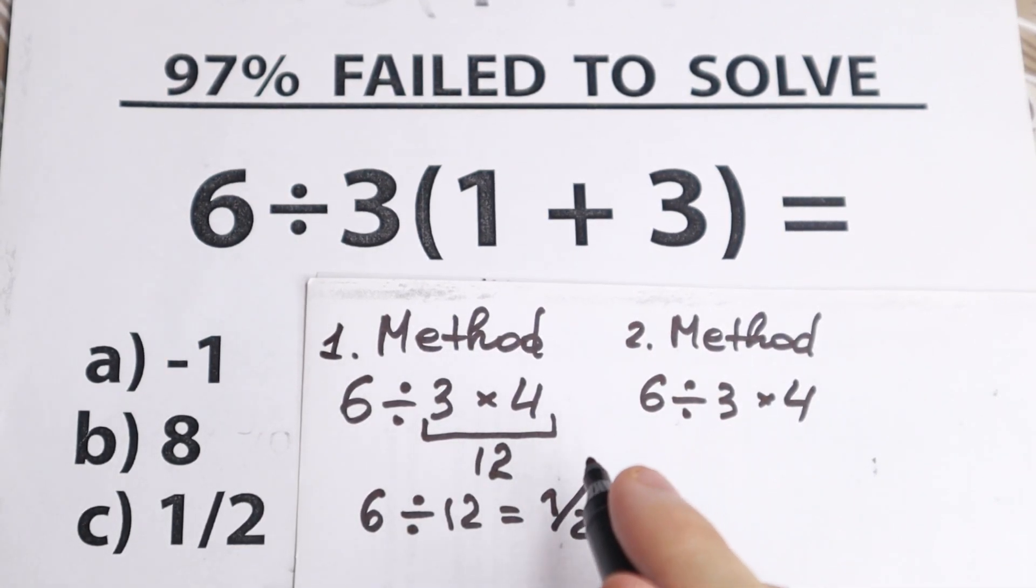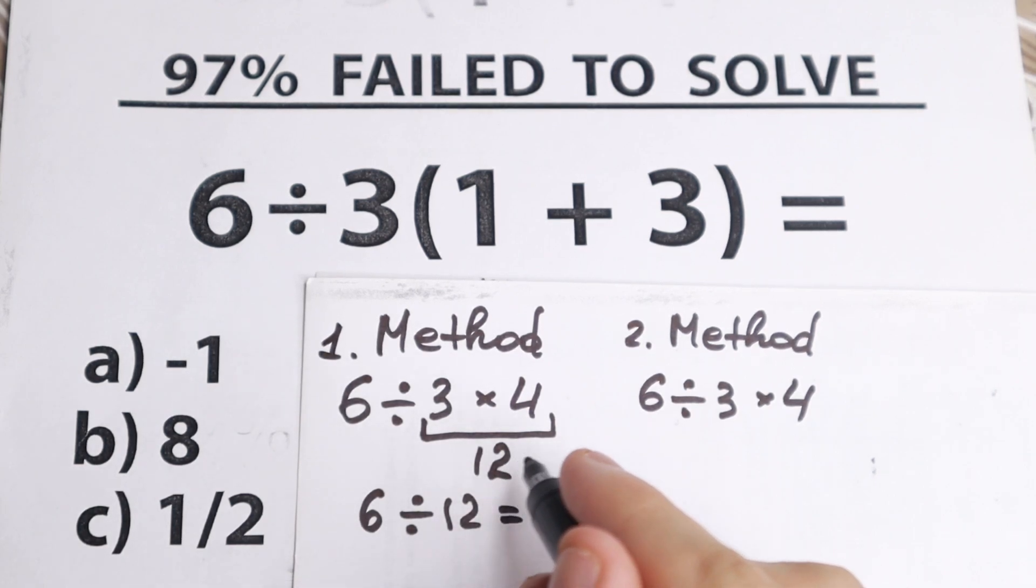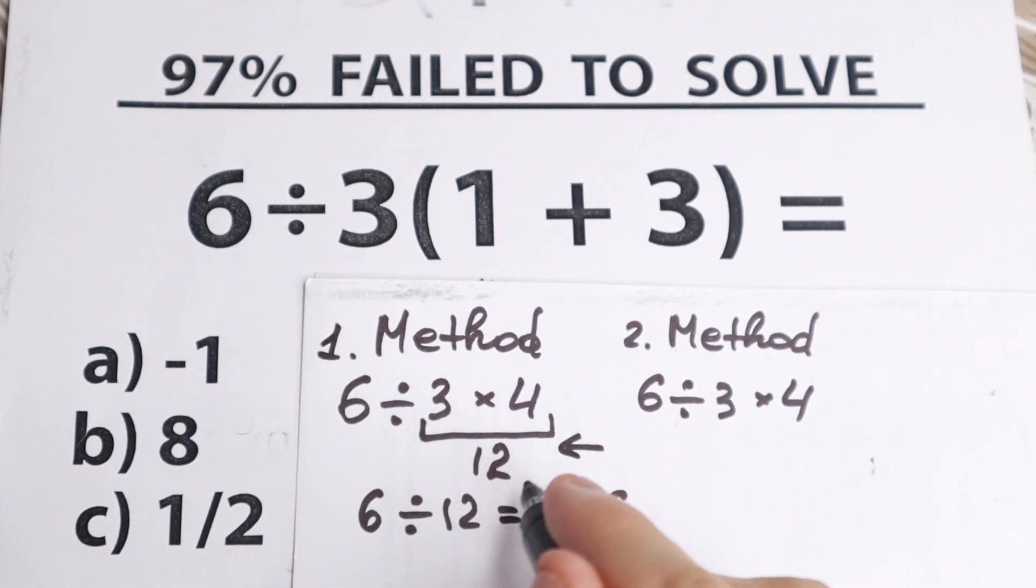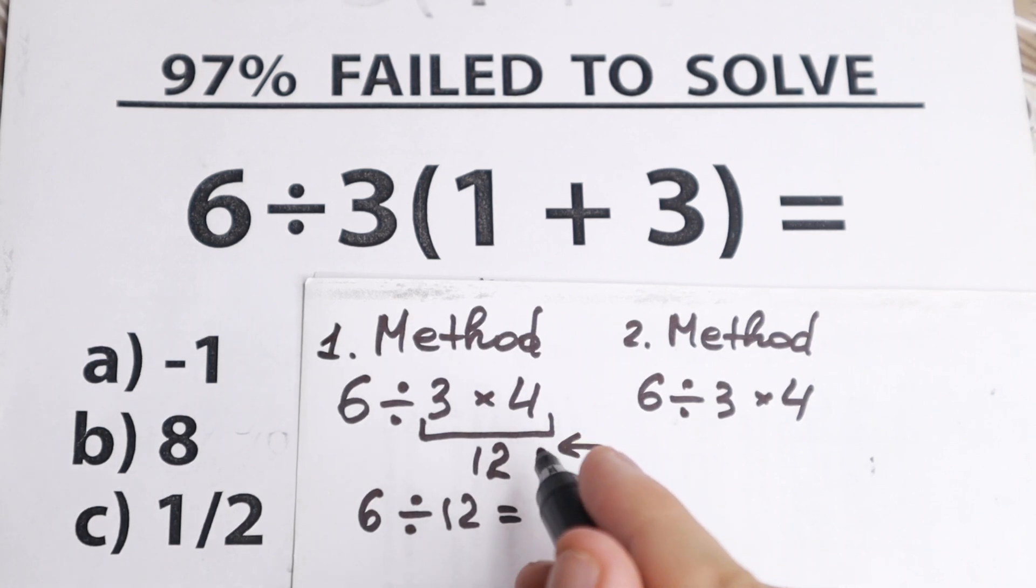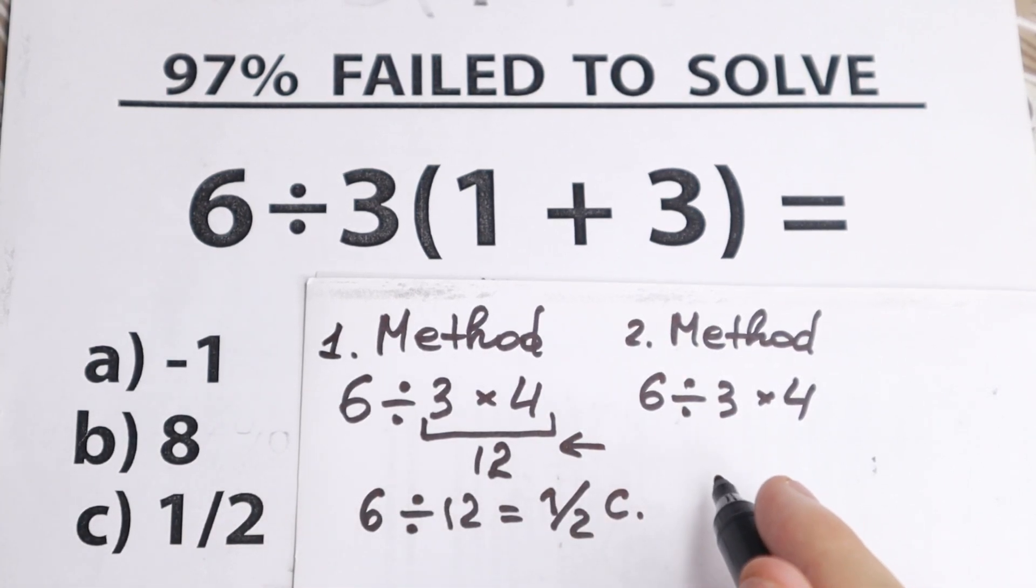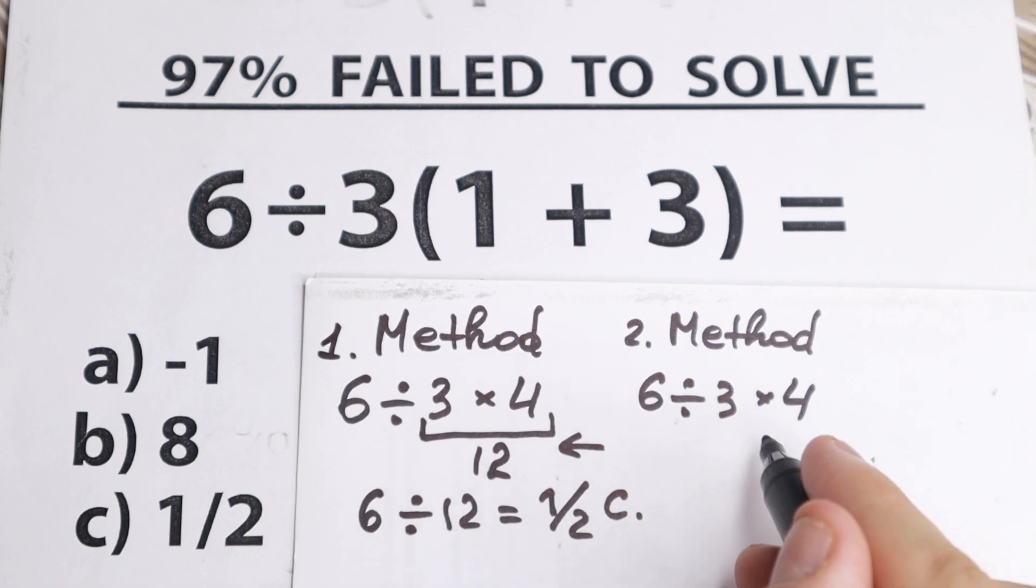But what is the moment right here? In this first method, we go from right to left. Because we start with multiplication and we go to the left side. But in this moment we need to start with left to right.